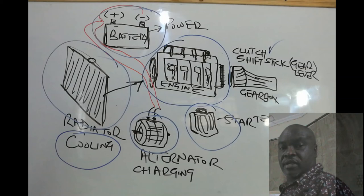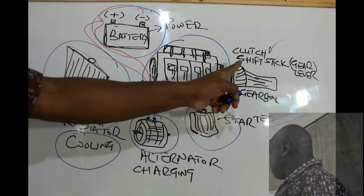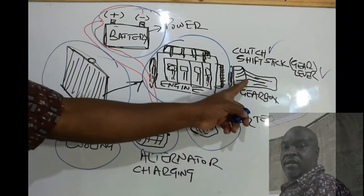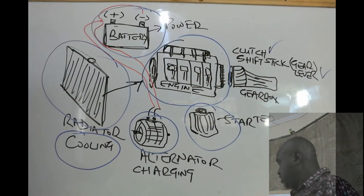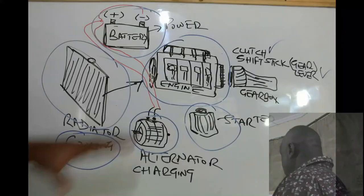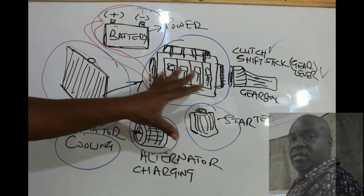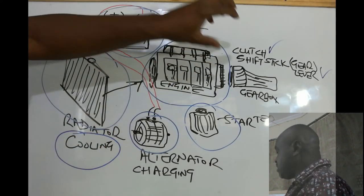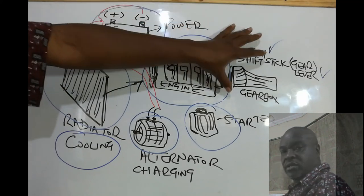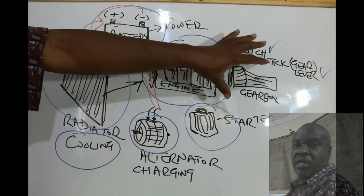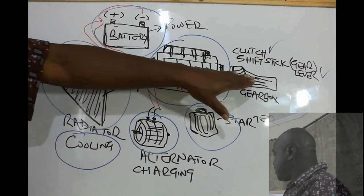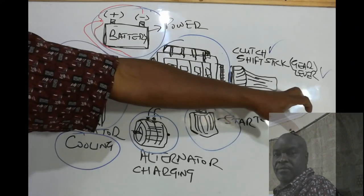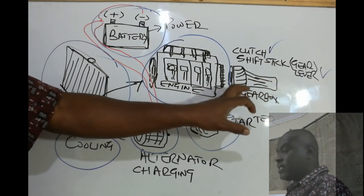What is found in the gearbox mainly is your clutch and the gear stick or gear lever, which is used to engage gears in a car. Those are the major components, and that is how the engine produces power and transfers motion to the gearbox. The gearbox then uses various gear ratios inside itself to transfer that motion to the wheels.